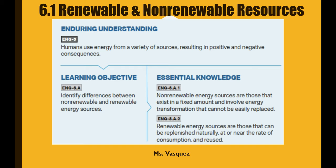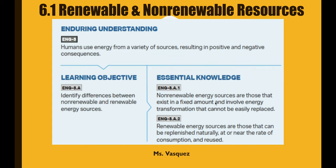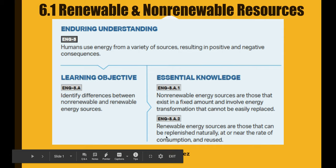Energy is going to be our main topic. For 6.1 we're going to cover the types of non-renewable versus renewable resources and the characteristics of each. Non-renewable resources exist in a fixed amount, involve energy transformation, and cannot be easily replaced — they take too long to replenish. Renewable resources are those that can be replenished naturally or near the rate of consumption, and they can be reused.